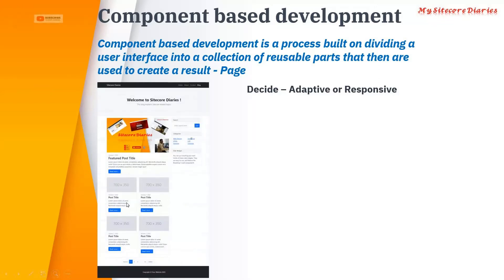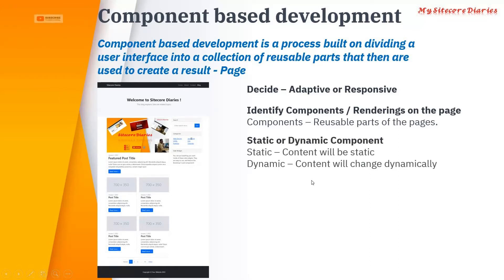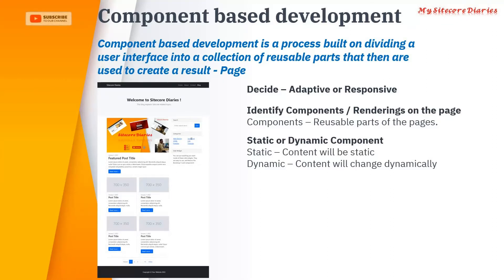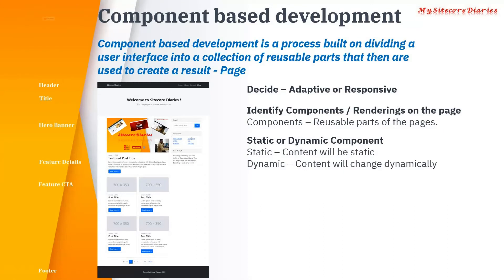Assume this is the page we have to develop. How do you do component-based development? First, identify the components or renderings on the page. Then identify what is a static component and what is a dynamic component. Static content will not change — for example, the copyright text is a static component. Dynamic components have content that can change, like a banner that might be different on each page. So on one page you can have a different banner — that is a dynamic component. If you take this page, the header is one component, then you have a title, hero banner, feature details, feature CTA, footer, etc. as components.